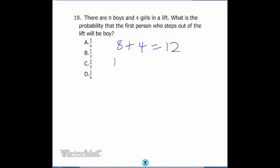My formula for probability is always the number of required outcomes over total possible outcomes. For a person to step out of the lift and be a boy, it would be any of the 8 boys out of all 12 individuals. 8 over 12 is 2 over 3, so the correct option is option C.